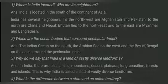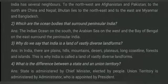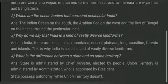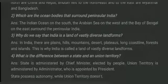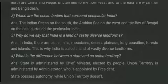The last question: what is the difference between a state and a union territory? A state is administered by a chief minister elected by the people. A union territory is administered by an administrator who is appointed by the president. A state has autonomy while a union territory does not.